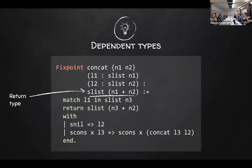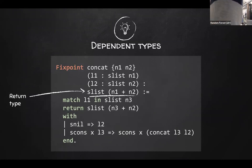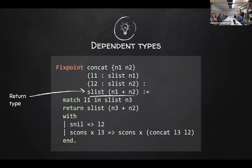We're pattern matching on L1 — that's the scrutinee. The return line is just a type. You match L1 as an SList of n3, so you're pulling out the type argument, and then you're saying you're going to return a list of n3 plus n2. The match actually does it.